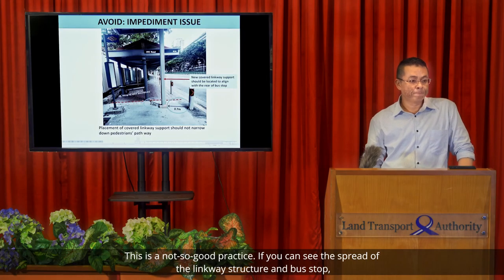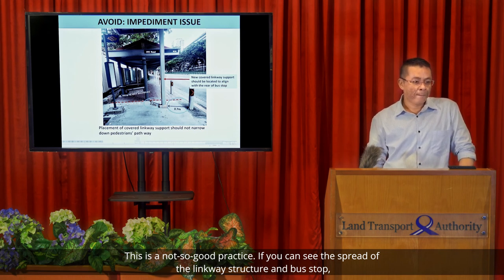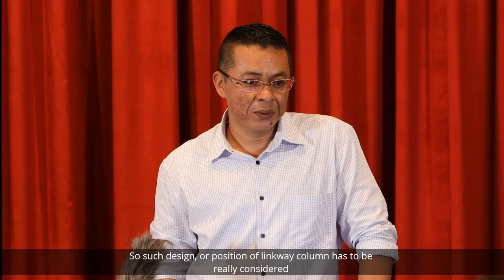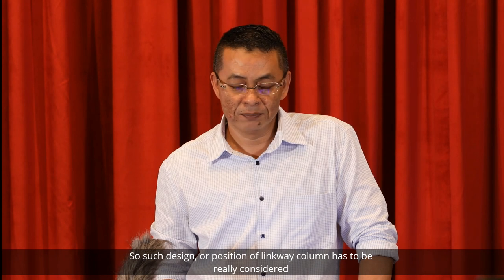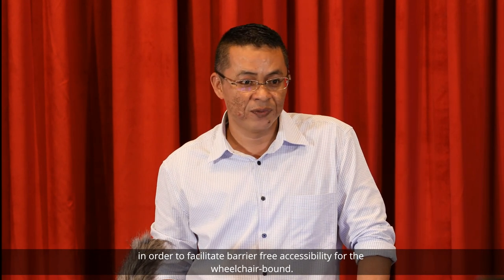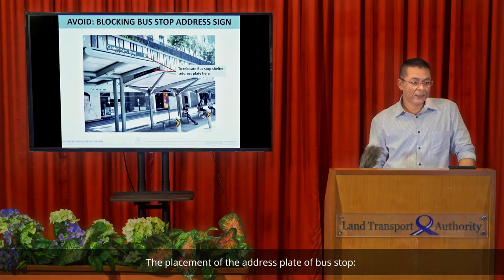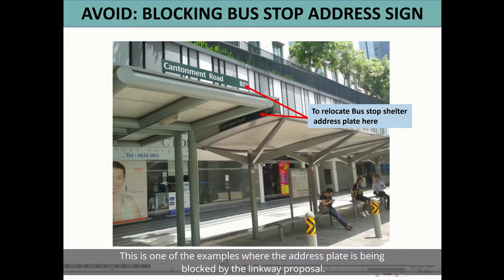This is an example of not-so-good practice. The spread of the Linkway structure and bus stop does not permit wheelchair passage. The position of the Linkway column has to be carefully considered to facilitate barrier-free access for wheelchair users. The placement of the address plate on the bus stop must also be considered — one example shows the address plate being blocked by the Linkway proposal. Ideally, this address plate should be relocated as shown in the photograph.